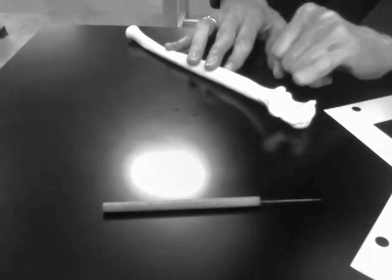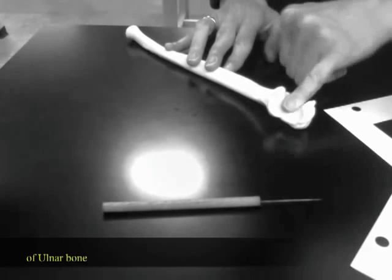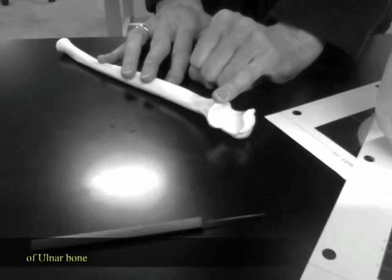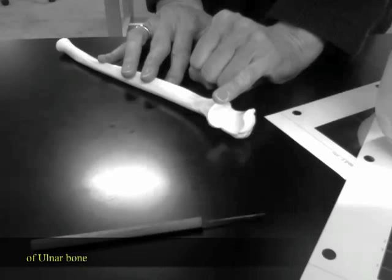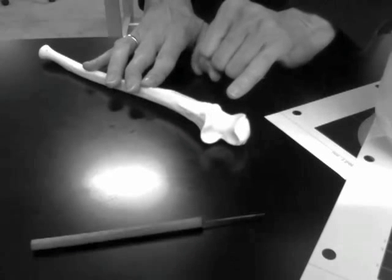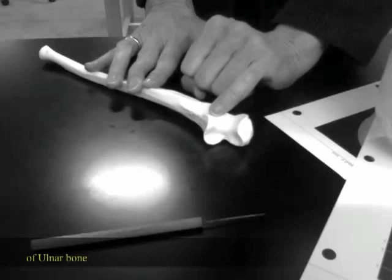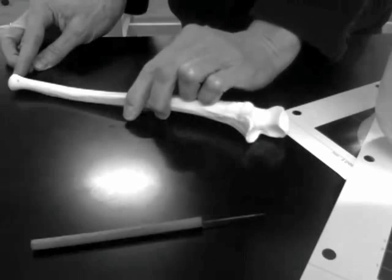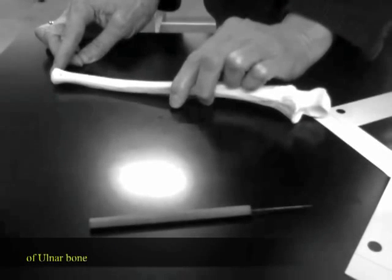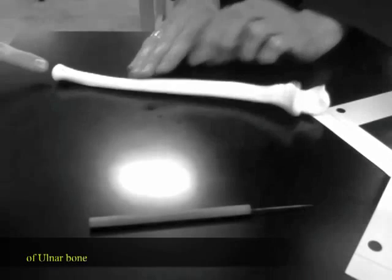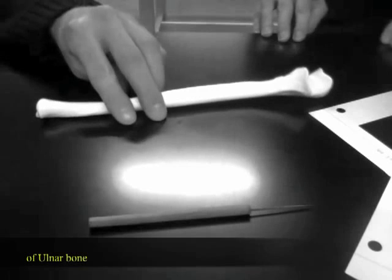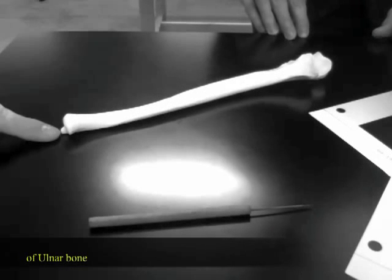This is the olecranon process, the trochlear notch, the coronoid process, the radial fossa on the inner, the styloid process. That's that little piece that's poking out right there, right? Styloid process.